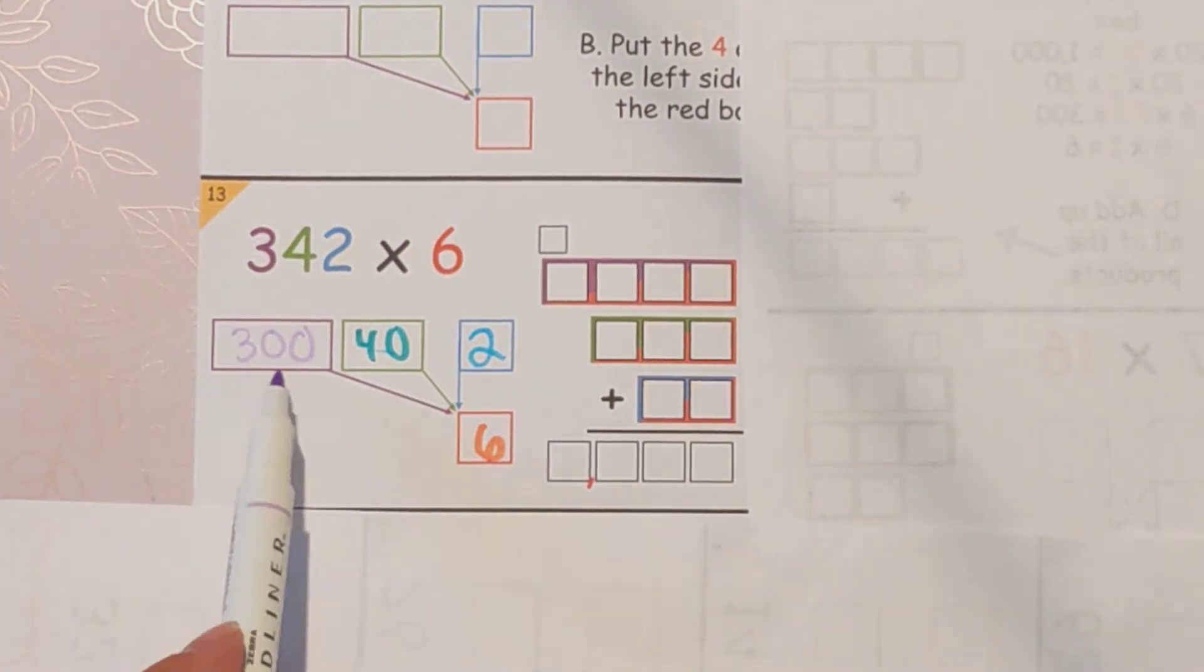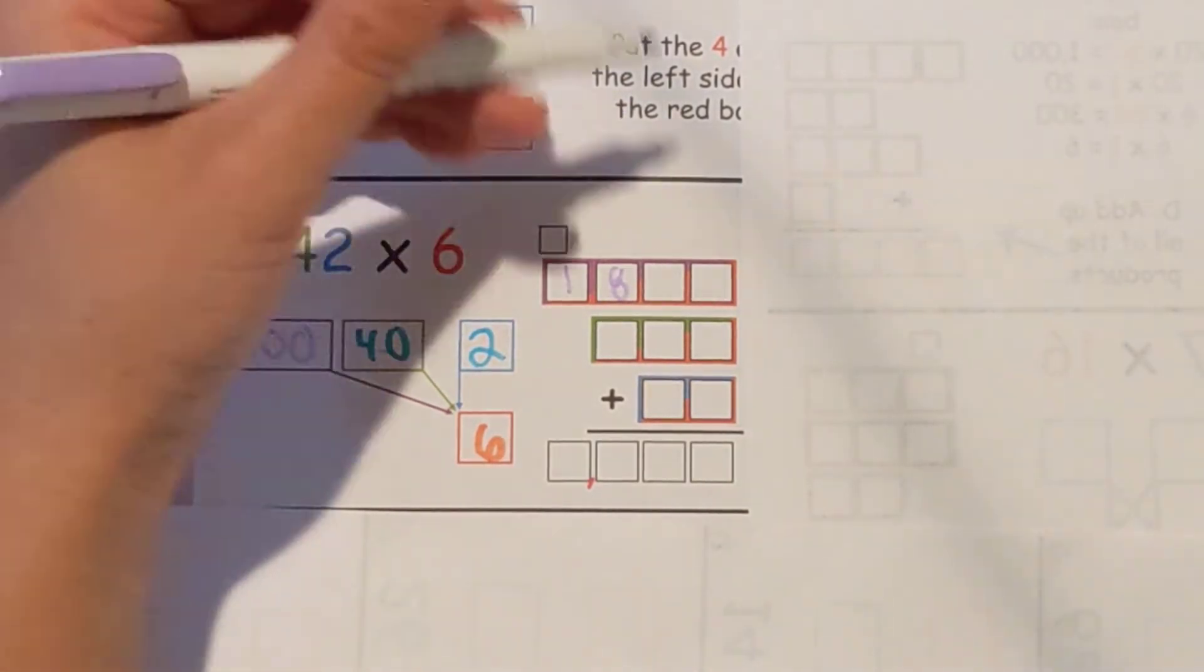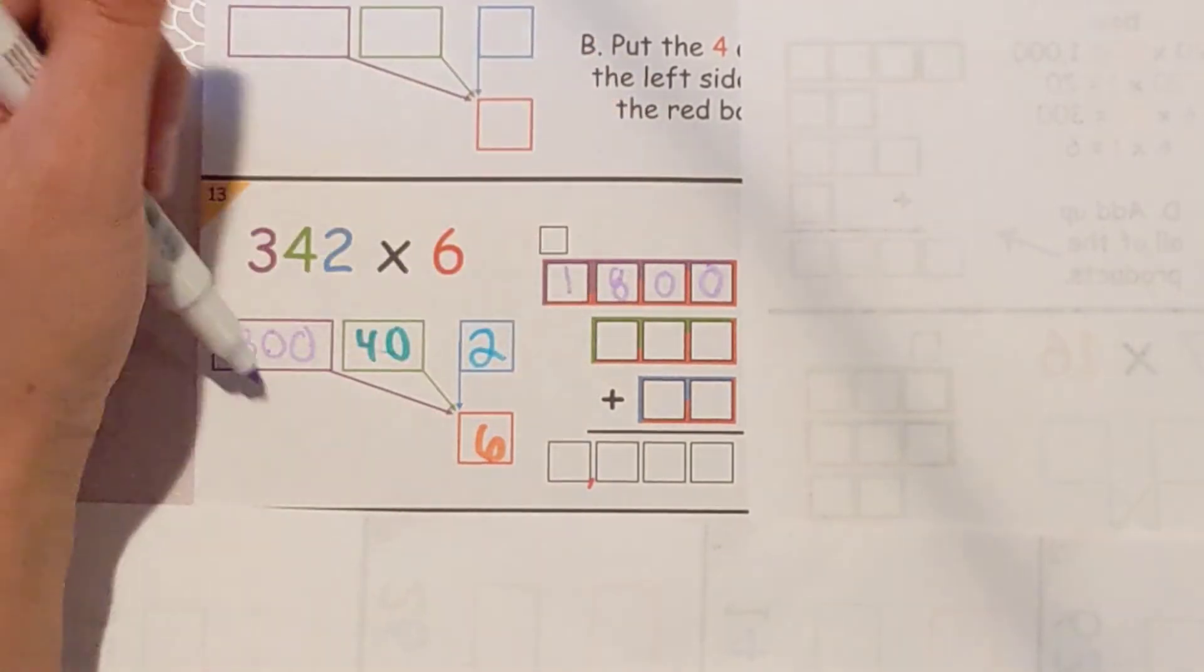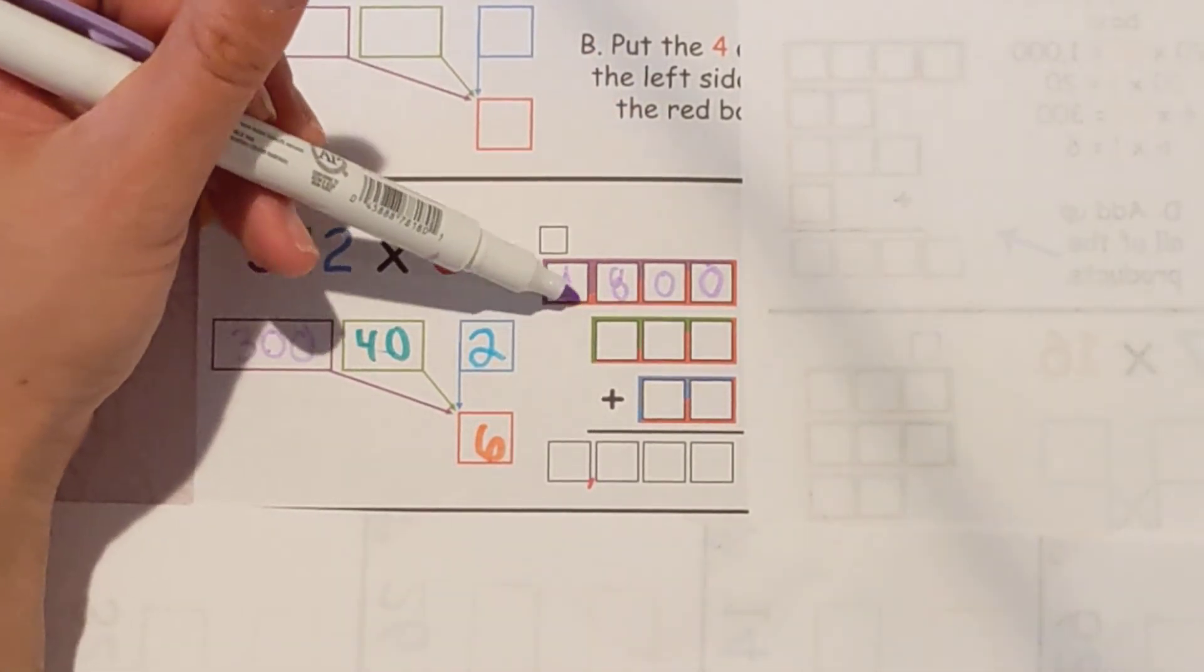For 300 times six, we're going to forget about the zeros. Pretend they're not there. You're just going to do three times six, which is 18. And then you just stick those two zeros back in. So three times six is 18, but 300 times six is 1800.